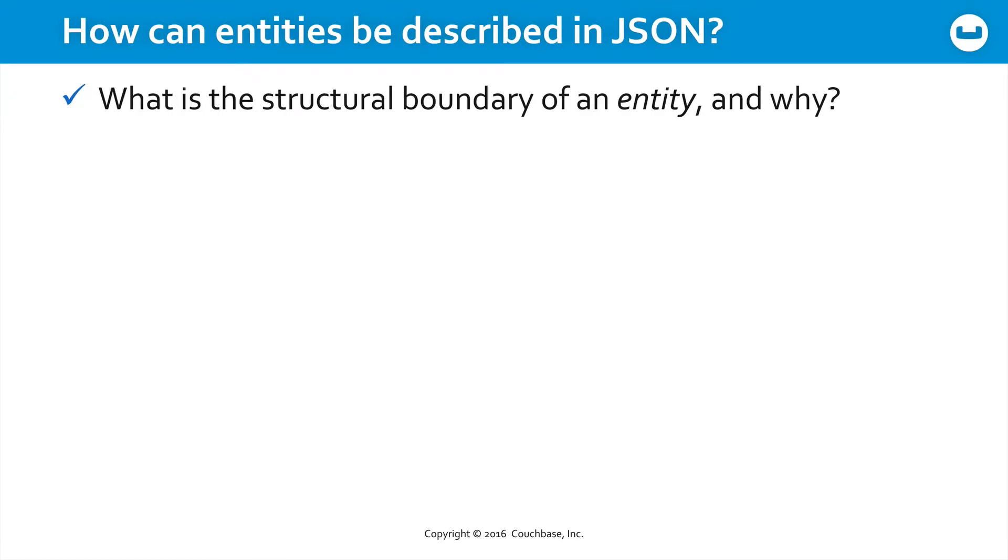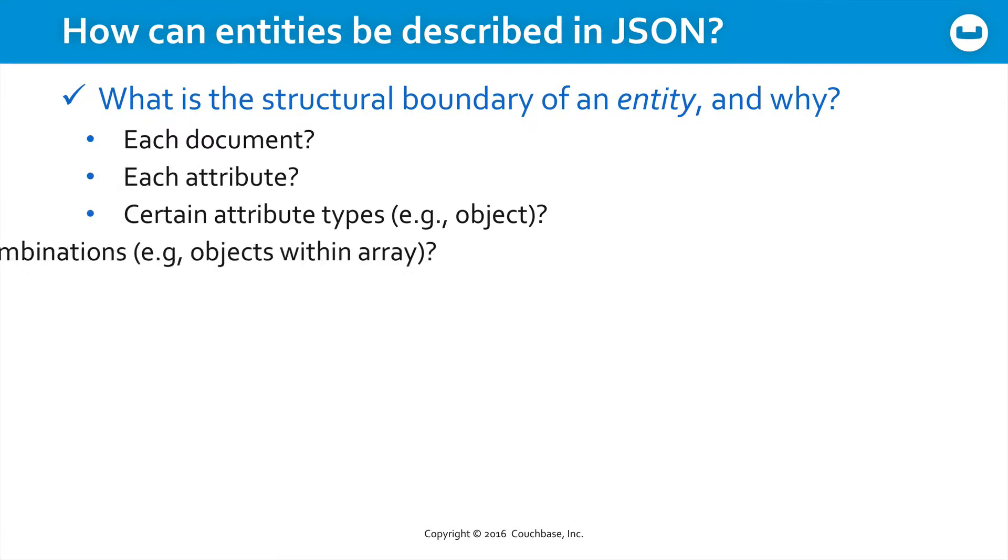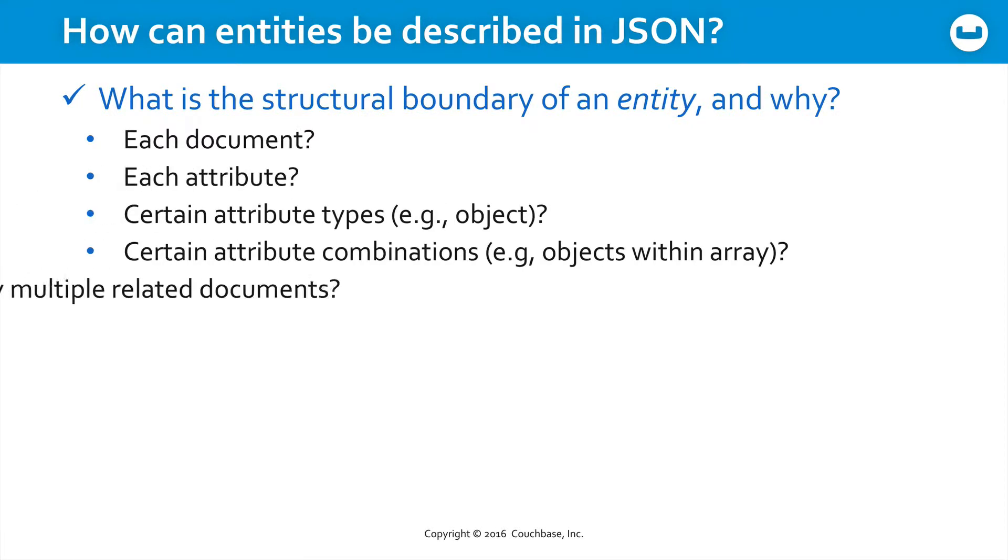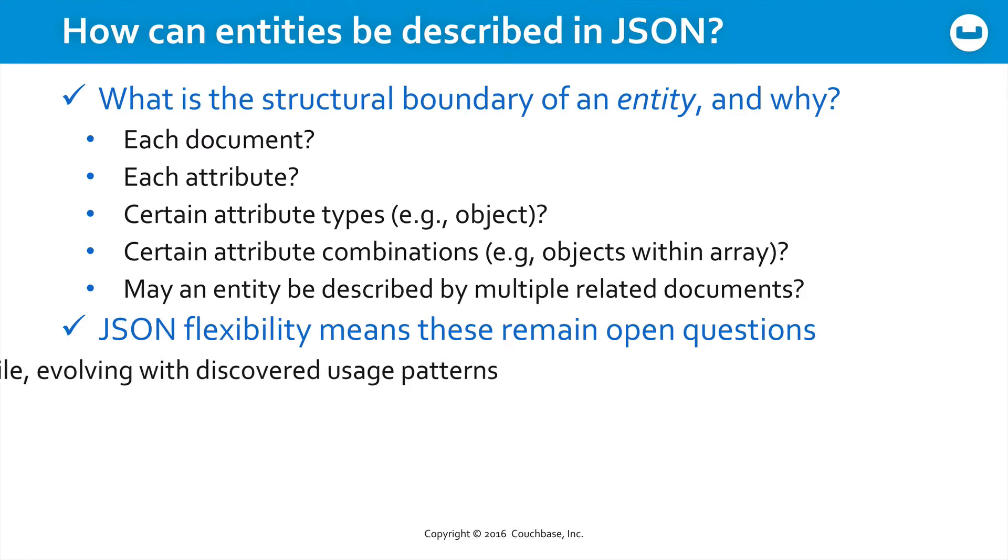So in JSON, you have to think about what is the structural boundary of an entity and why. Is it each document, each attribute, certain attribute types, certain combinations of attributes? Could an entity be described by multiple related documents? Well, JSON is flexible, and all these remain open questions, because ultimately you could do it in any of these ways.